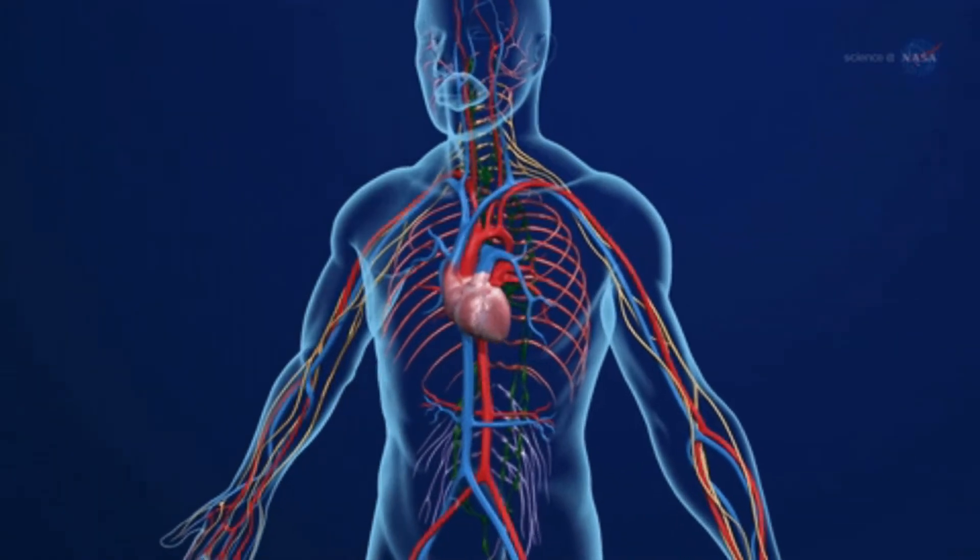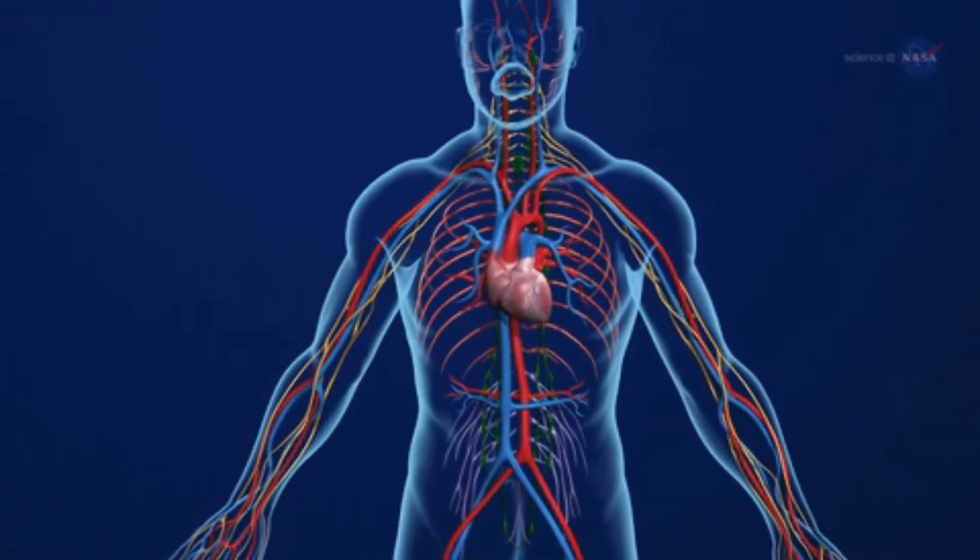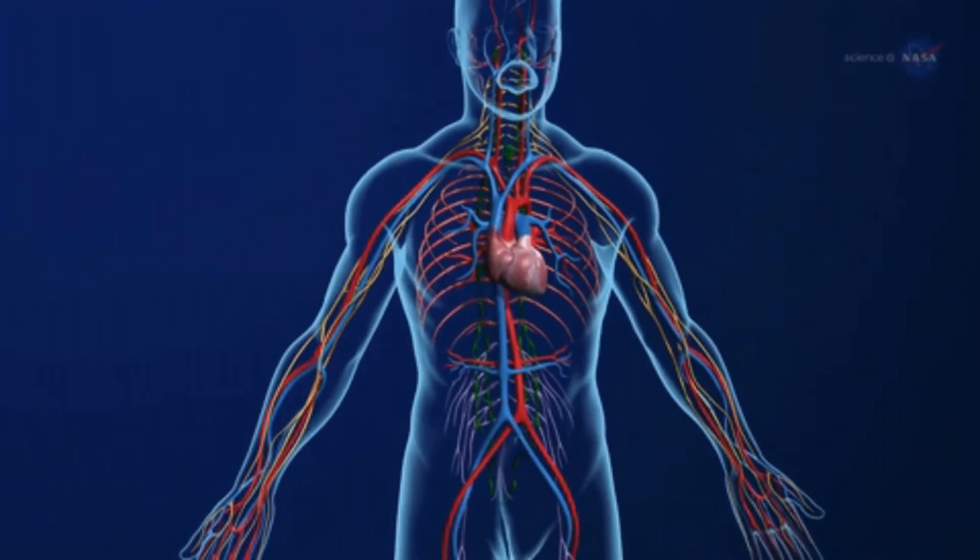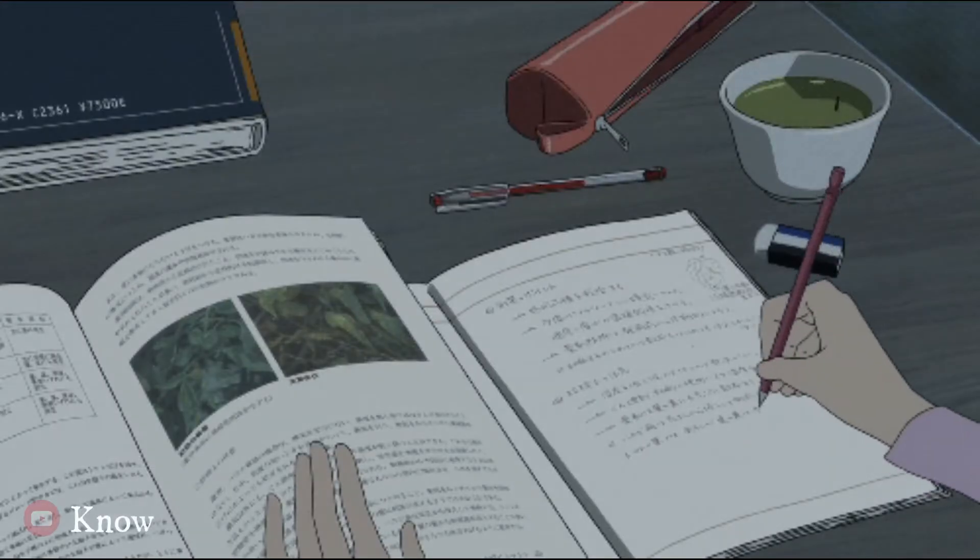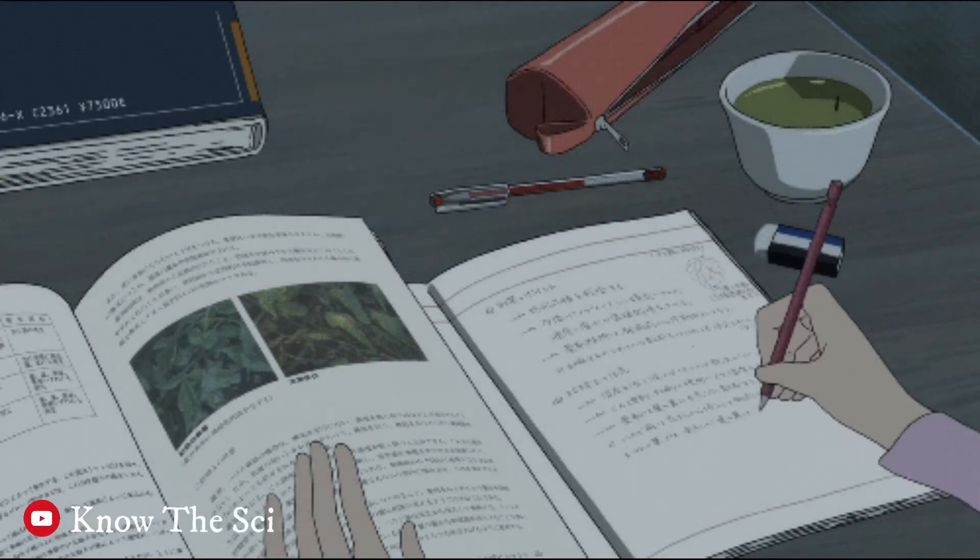A new study has revealed that humans, along with all other mammals and reptiles, have the capability of producing venom. The study, published in the journal Proceedings of the National Academy of Sciences, said humans apparently have a toolkit to produce venom.